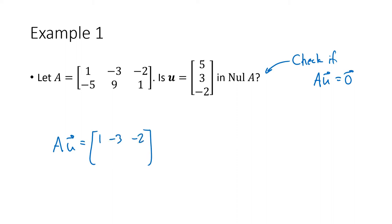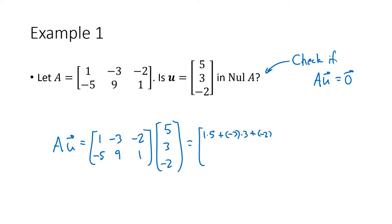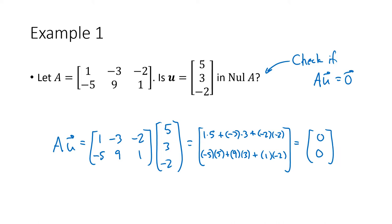So what's A times U? It's the matrix with entries 1, -3, -2, -5, 9, 1 multiplied by the vector 5, 3, -2. Using the row-column method: first entry is 1×5 + (-3)×3 + (-2)×(-2), and the second entry is (-5)×5 + 9×3 + 1×(-2). Working all that out, we do get zero, zero. Notice that U is in R3, but A times U is the zero vector in R2, because the matrix isn't square — the domain is R3, the codomain is R2.